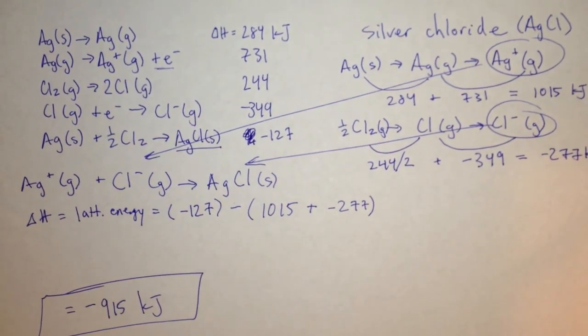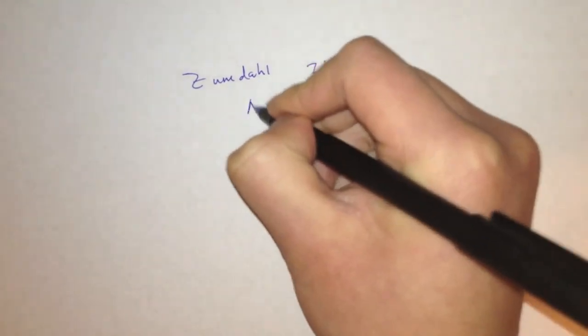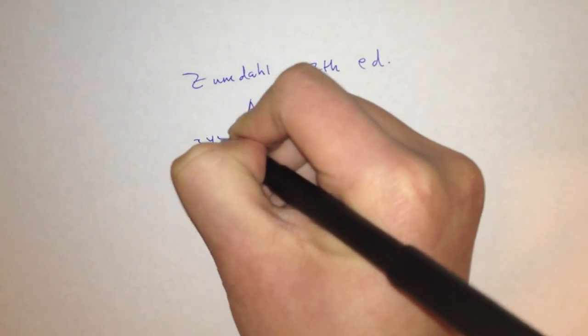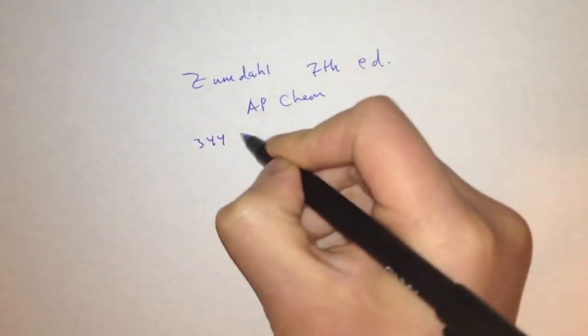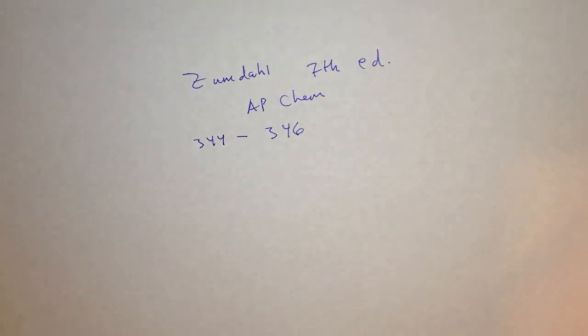I hope you've learned a lot by watching this video. If you feel like you haven't learned enough, you can go over this again in the Zumdahl 7th Edition AP Chemistry book, beginning on page 344 and ending on about page 346. This is part of the Bonding General Concepts chapter, which is chapter 8. Thanks for watching.